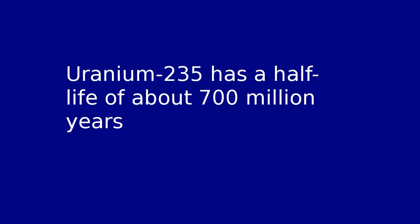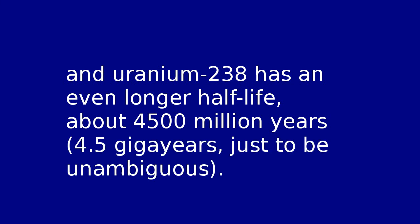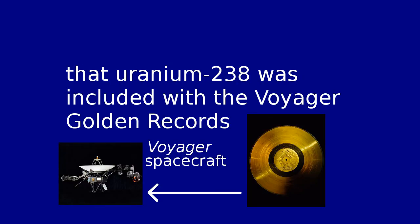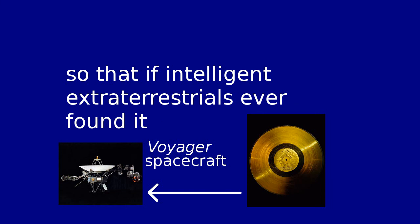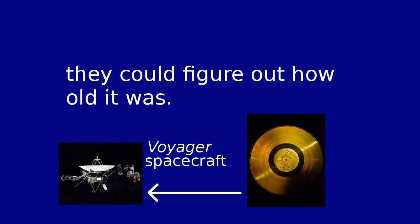Uranium-235 has a half-life of about 700 million years, and Uranium-238 has an even longer half-life — about 4,500 million years, or 4.5 giga-years, just to be unambiguous. These half-lives are so long that Uranium-238 was included with the Voyager golden records, so that if intelligent extraterrestrials ever found it, even millions or billions of years in the future, they could figure out how old it was.